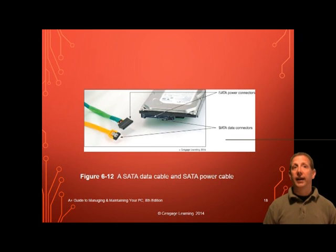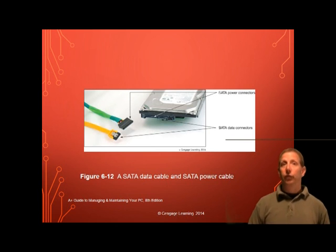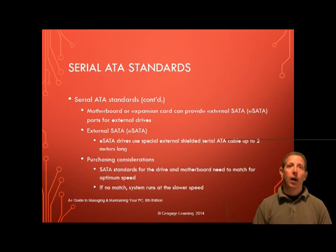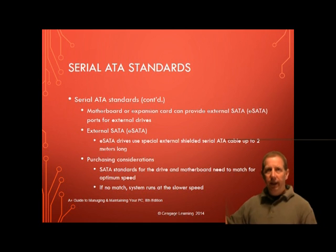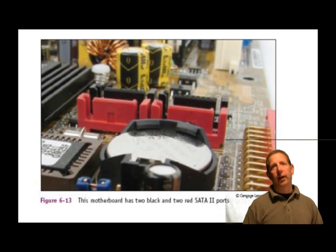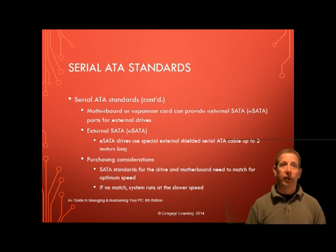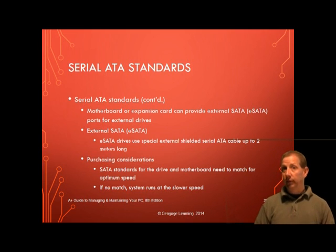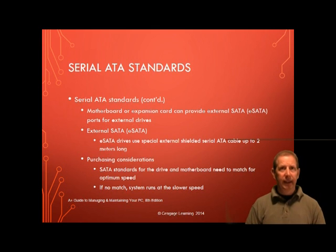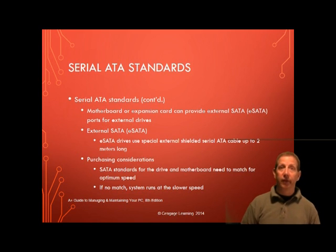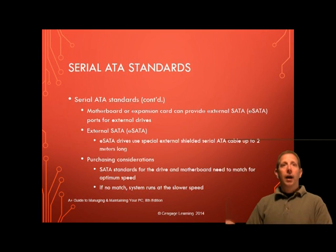The thinner SATA cables don't hinder airflow inside the case as much as a wider ribbon cable does. A motherboard might have two or more SATA connectors, and you should use them in the order recommended in the motherboard user guide — for example 0, 1, 2, 3. In an example with four connectors shown, you're told to use the red ones before the black ones. In addition to internal SATA connectors, the motherboard or an expansion card can provide external eSATA ports for external drives. External SATA drives use a special external shielded SATA cable which can be up to 2 meters in length.